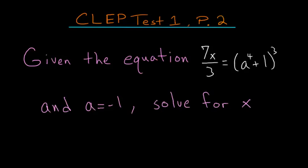In problem two of this CLEP test we're given this equation where we're told that a is equal to negative 1 and we need to solve for x.